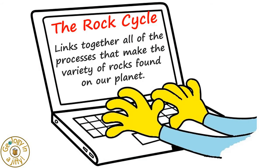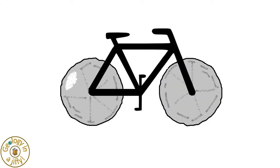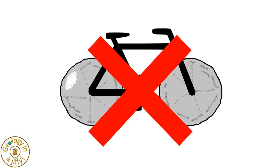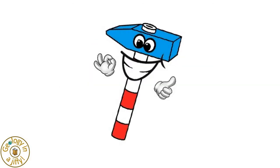The Rock Cycle is a way of linking together all of the processes that make the variety of rocks that we find on our planet Earth. When people hear Rock Cycle, they may think of a bike with wheels made of rocks. No, that is not correct, although it is quite a good image.